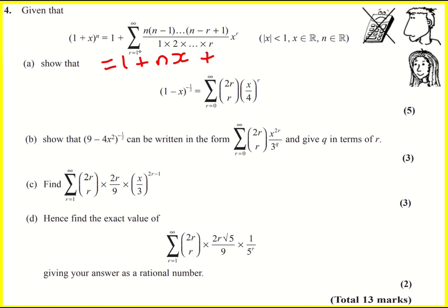For r equals 2, we just keep multiplying n by n minus 1 until the last term, which is n minus 2 plus 1 — that is n minus 1. So for this term we'll get n times (n minus 1), then we stop and divide by 2 factorial, 1 times 2, and x squared. And if you keep going, you'll see that this is none other than the general binomial expansion for real coefficients.